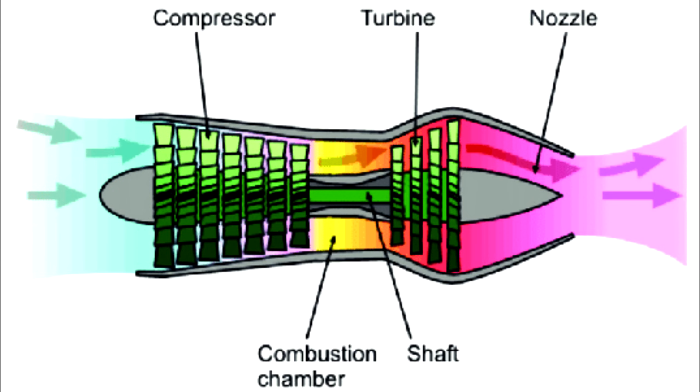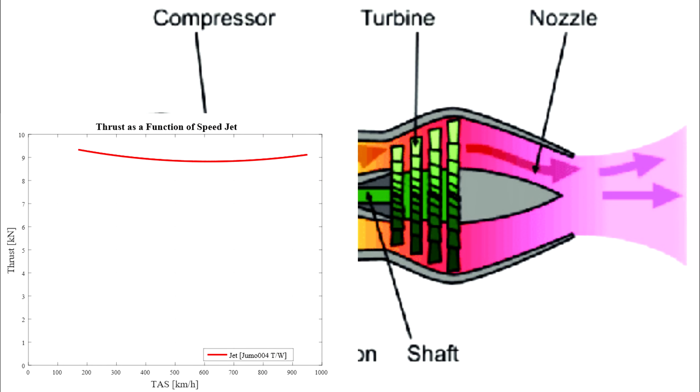Turbojet performance is given in terms of thrust directly, because thrust is essentially constant with speed for a jet, as you can see on this graph of a typical turbojet thrust as a function of speed. That's because the exhaust speed is very high on a jet, so the intake speed increasing has a lower effect on thrust on a jet, as opposed to a prop. Further, as speed increases, the air is slowed down and compressed by the intake, which increases the pressure and hence the air density in the engine, which allows for higher mass flow and more fuel burn, which increases thrust. These two effects combined keep thrust relatively constant with speed, which is much better than a piston engine for high speed flight.